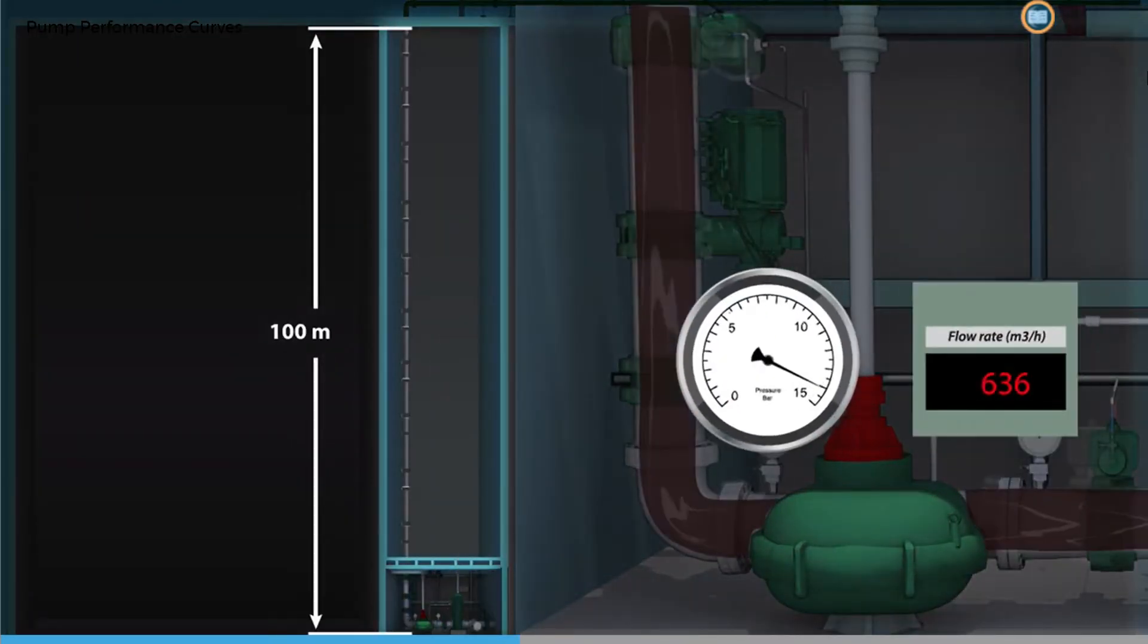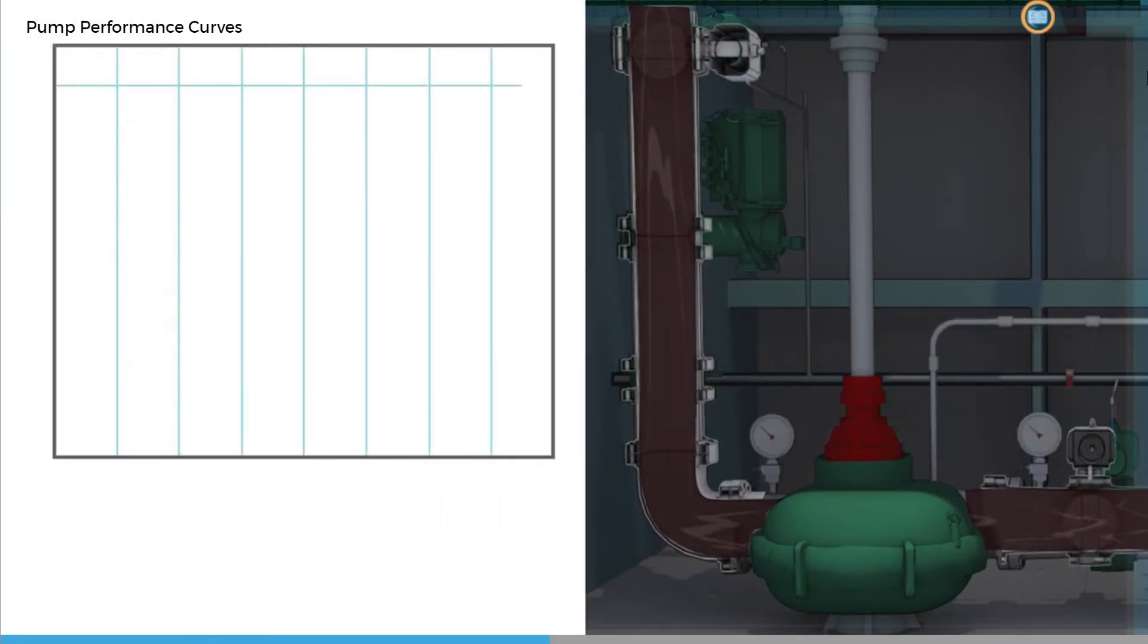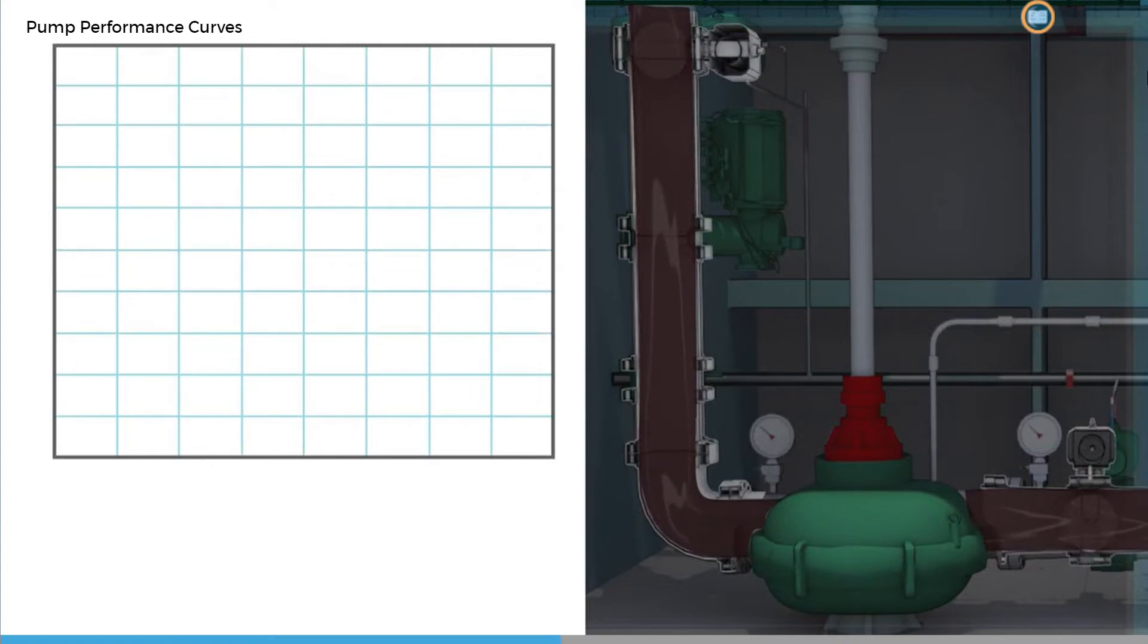How the head changes with flow is a characteristic of a centrifugal pump, and this relationship can be shown on a graph. Here, the x-axis represents the volumetric flow rate in meters cubed per hour. We give this the letter Q.